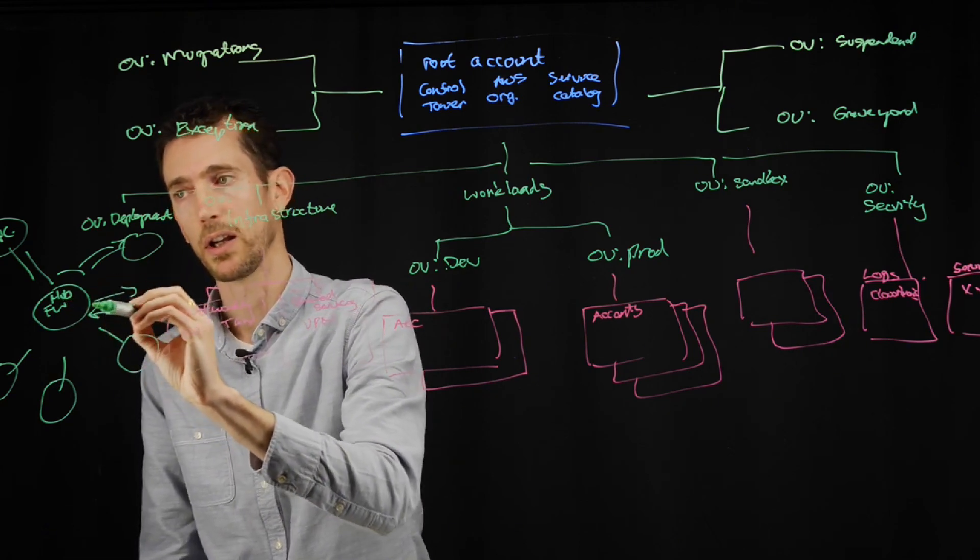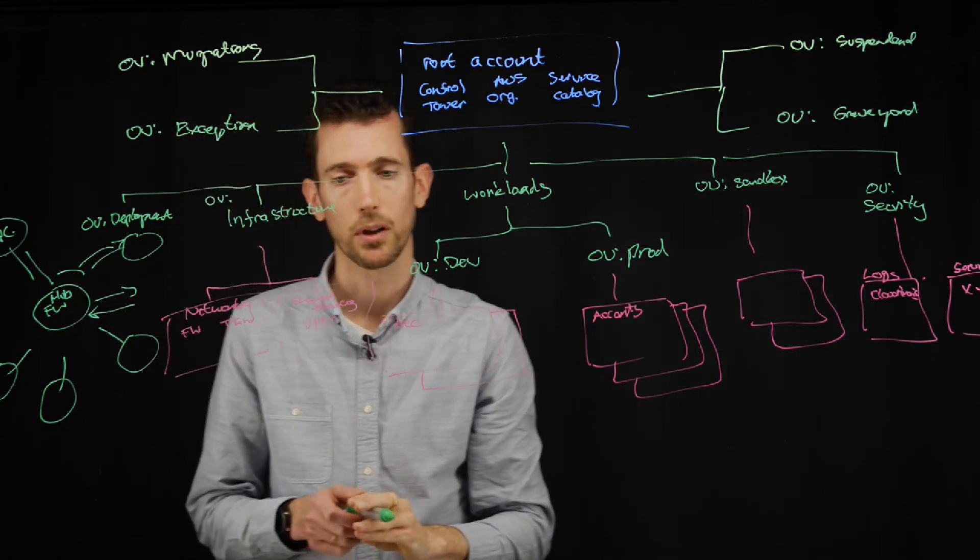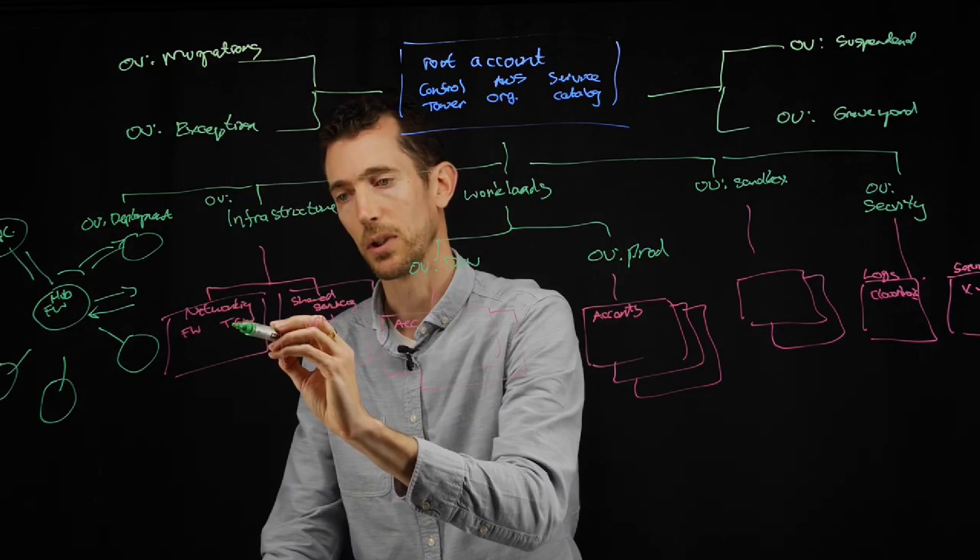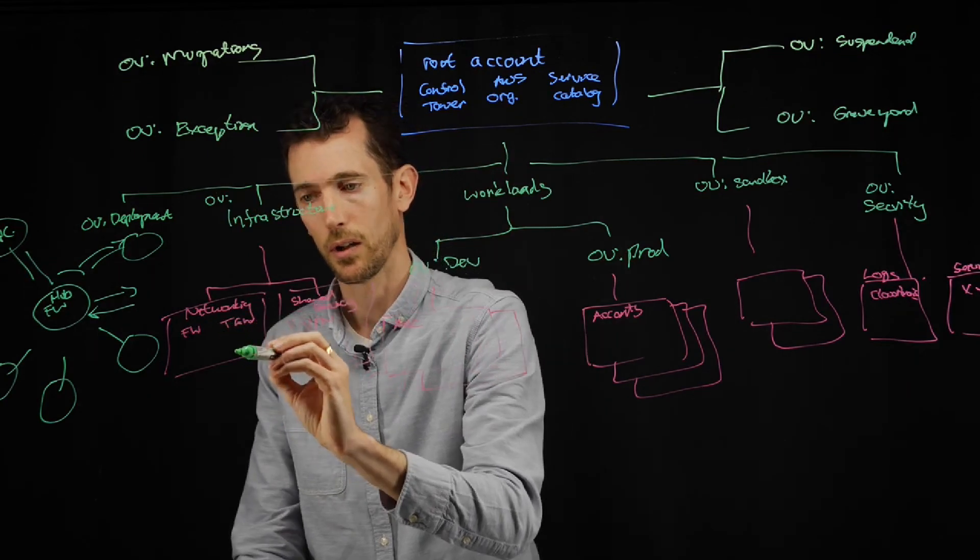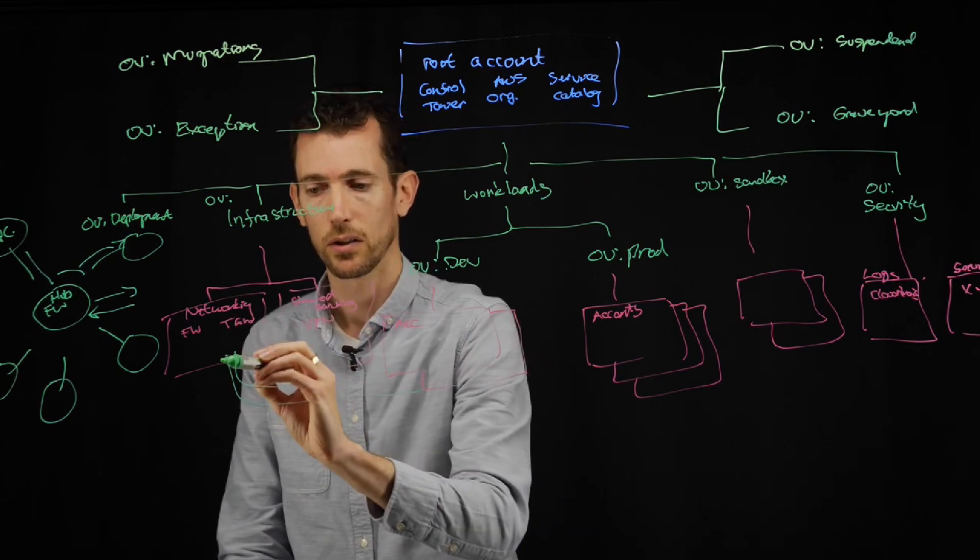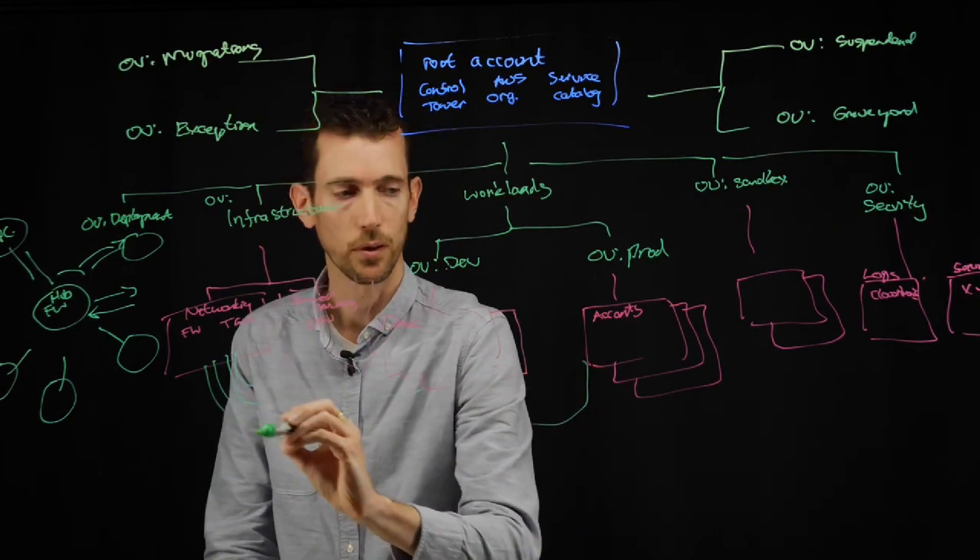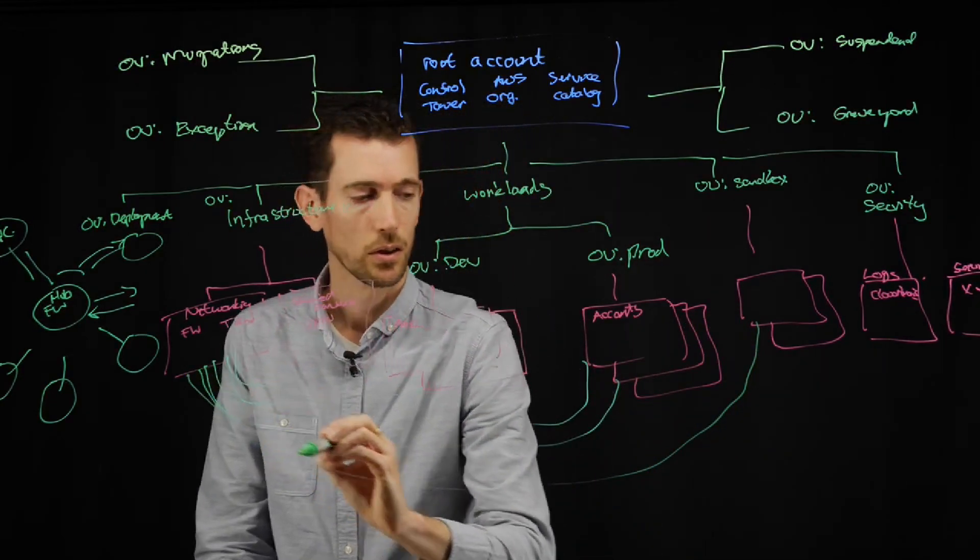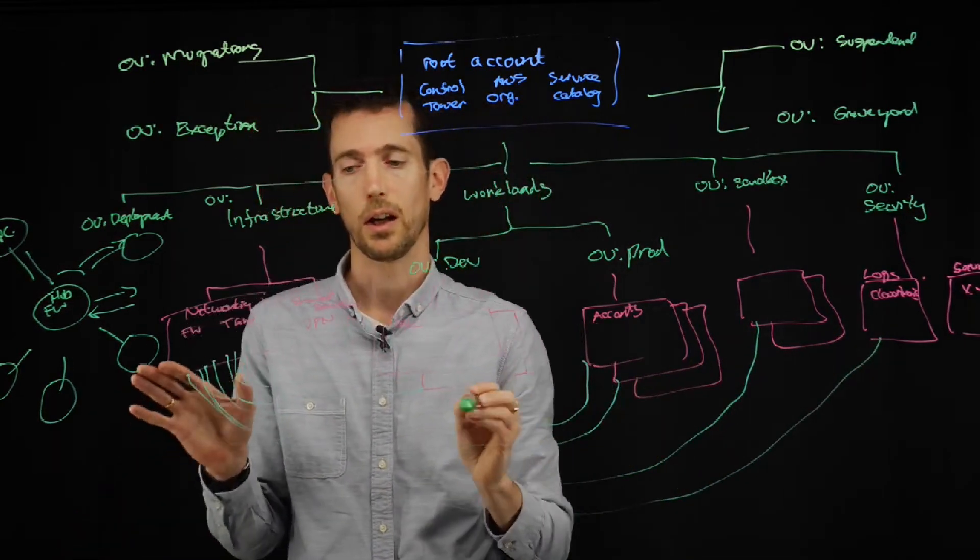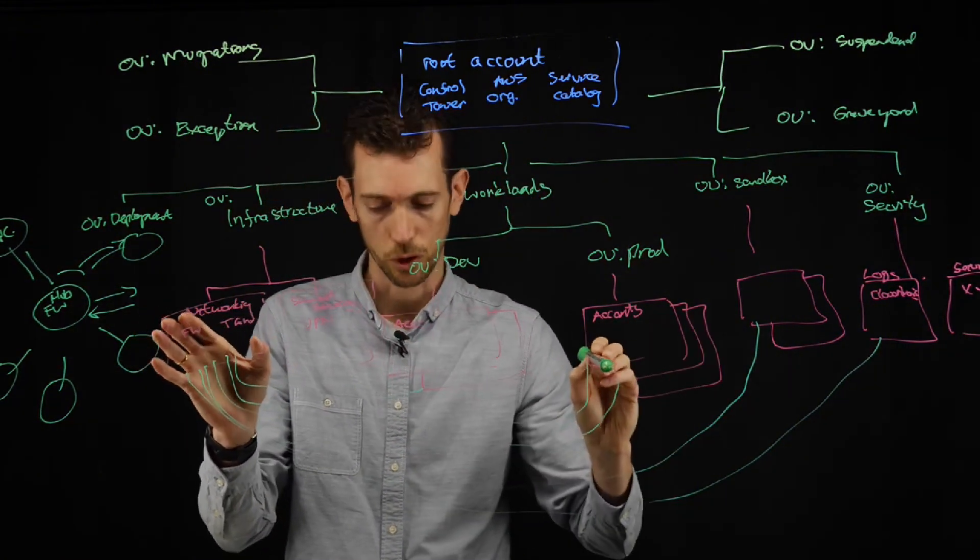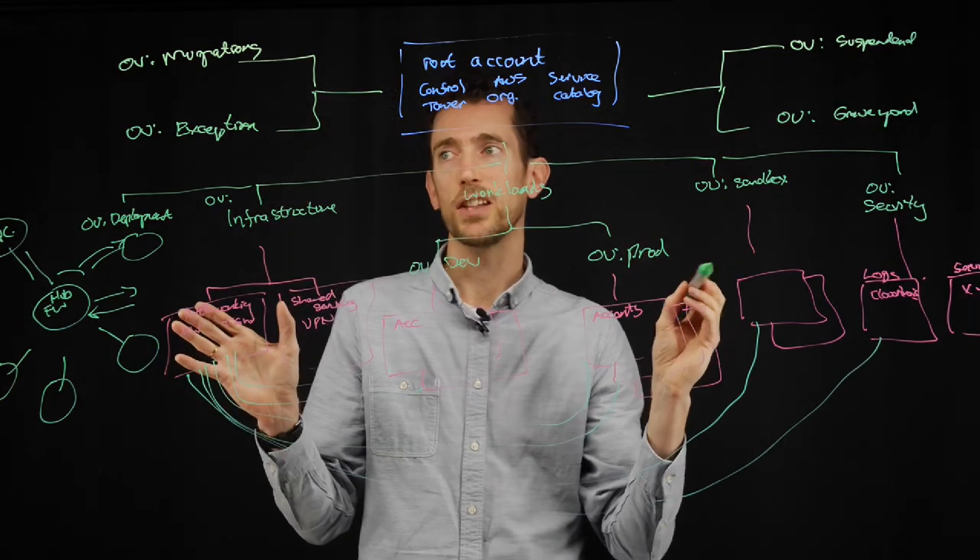So in this diagram, this would exist within the networking account and then there'd be links in to all these different VPCs. So you can see that there's a lot of, this is your hub and then these would be your spokes.